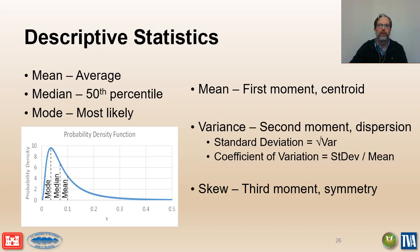The variance is the second moment or moment of inertia of the probability distribution and measures the uncertainty or dispersion of the variable. The standard deviation, which is more commonly used, is calculated as the square root of the variance. The coefficient of variation gives us a relative measure of uncertainty by dividing the standard deviation by the mean. The skew is the third moment of the probability distribution and measures the symmetry of the values. Positively skewed distributions have a tail to the right, and negatively skewed distributions are the mirror image with the tail to the left.